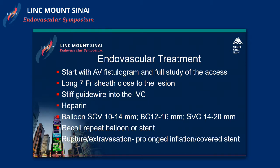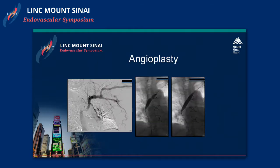If balloon angioplasty results in recoil, usually re-balloon or stent — most times stent. Rupture or extravasation can occur, and these are usually treated either with a prolonged inflation, a stent, or a covered stent.